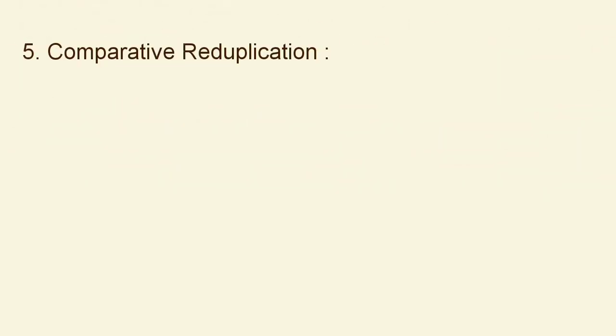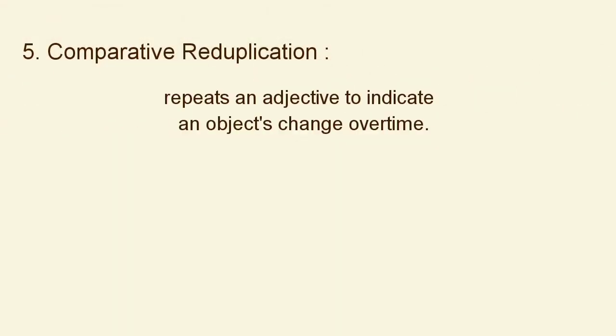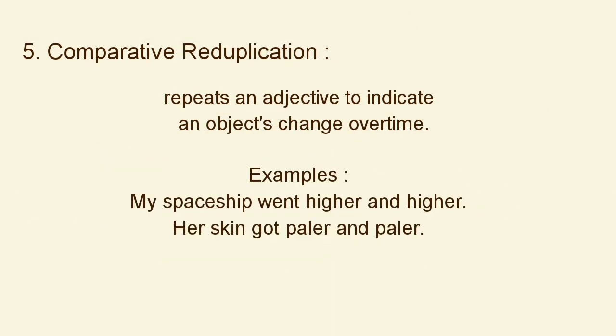The next type is comparative reduplication. Comparative reduplication repeats an adjective to indicate an object's change over time. For example, we can see from the sentence: my spaceship went higher and higher, or her skin got paler and paler.